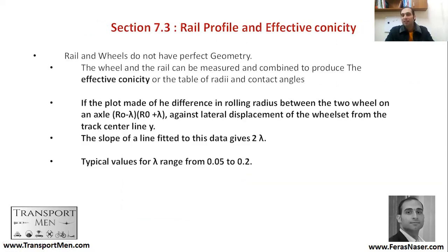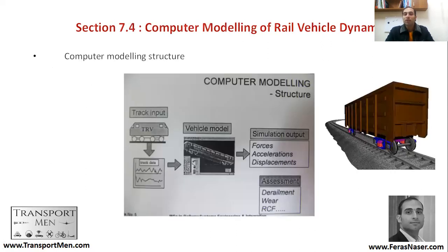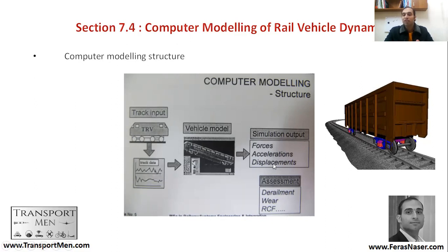Now that we have a basic understanding of the forces and geometry, we need to make some complex calculations. To do this, you need to build a computer model. To understand the computer model structure, you need to model your track — this is the track input, which you can get from track data. You also need a vehicle model, and there are different vehicle models that can be modeled in different ways. Based on that, you calculate forces, accelerations, and displacements, which then allow assessment of derailment and wheel-on-rail rolling contact fatigue.